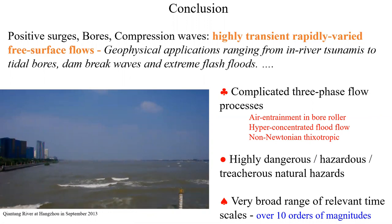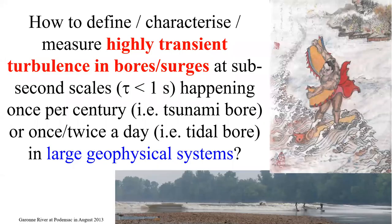By the way, the video shown was the tidal bore of the Qiantang River in Hangzhou. I will leave you with a key question: how can we define, characterize, and measure highly transient turbulence in bores and surges at a sub-second scale, for a geophysical process that may occur once a century for an in-river tsunami, to barely once or twice a day for a tidal bore during spring-tide conditions?